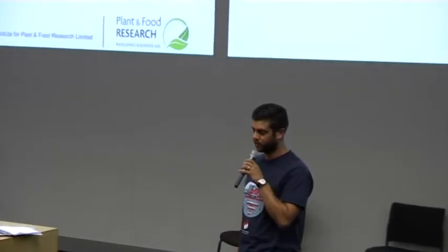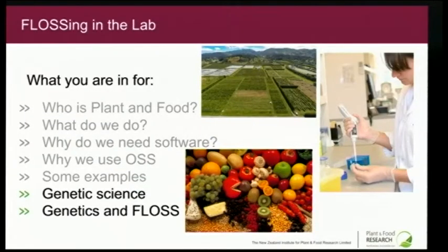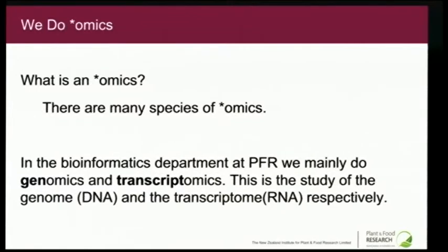My name is Ben. I'm in the Plant and Food Research bioinformatics team, and I also do quite a bit of software engineering on the side. I'm going to talk about the genetic science and why we use FLOSS for it. In the bioinformatics team we do omics — mainly genomics and transcriptomics, which are the study of DNA and RNA respectively.